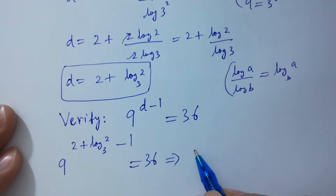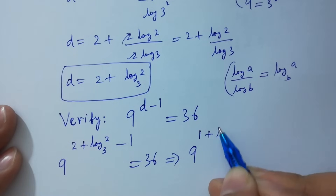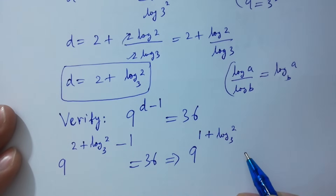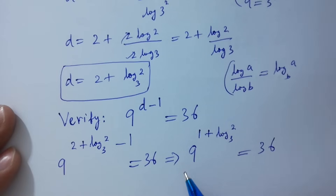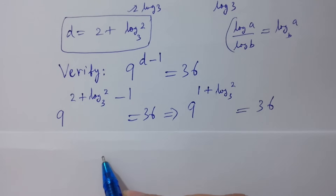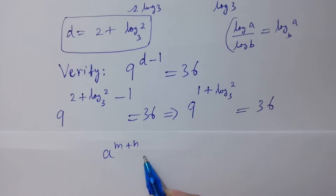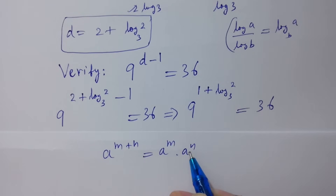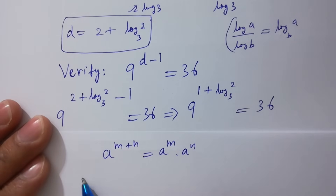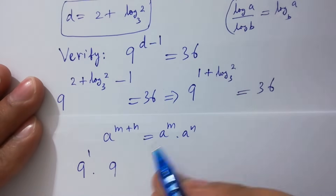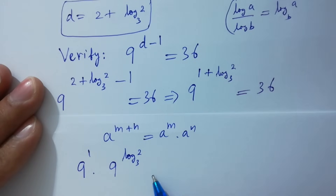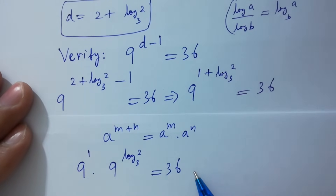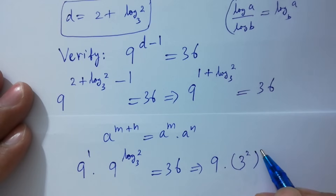Here 2 minus 1 gives 1, so we have 9 to the power 1 plus log 2 to the base 3 equals 36. Since a to the power m plus n equals a to the power m times a to the power n, we have 9 to the power 1 times 9 to the power log 2 to the base 3 equals 36.